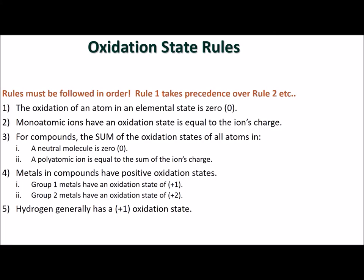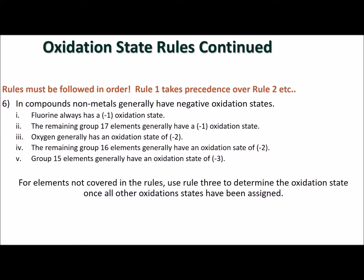When assigning oxidation states to atoms in a redox reaction, the rules must be followed in order. This means rule 1 takes precedence over rule 2 and so on. Review the oxidation state rules and use them to work through the redox examples in this section.